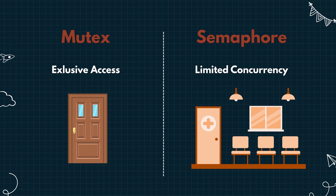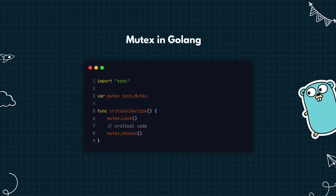Now let's see how to use mutexes and semaphores in some popular programming languages. Let's start with a simple mutex in Golang. Here we declare a sync.Mutex, then call the lock function before entering the critical section, and call the unlock function once we are done. This ensures only one goroutine can access the protected code at any time.